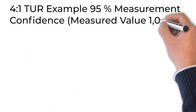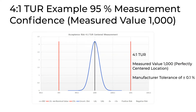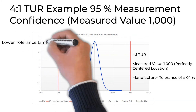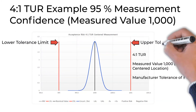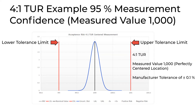Let's start with traditional logic using a 4-to-1 TUR. The process is perfectly centered and the measured value is 1000 with a tolerance specification of 0.1% of full scale. If the process never moved from this location, calibration intervals could be set in decades and the measurement risk is trivial. The graph shows normally distributed data with a lower tolerance limit to the left and an upper tolerance limit to the right.